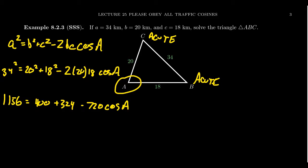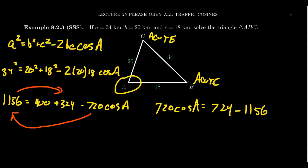Since we have a negative in front of cosine of A, I'm going to move it to the right-hand side of the equation. We'll move the 1156 to the other side as well by subtraction. So we get 720 cos A equals 400 plus 324, that's 724, and then we're subtracting 1156, which gives you negative 432. Don't worry that this is negative. It just means that the angle is going to be obtuse because if the cosine ratio is negative, we're in the second quadrant.